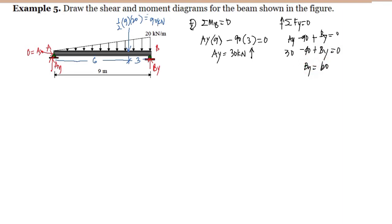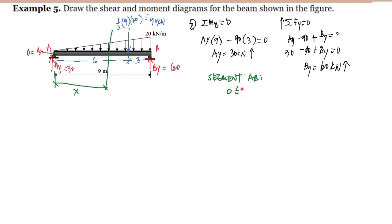Since Ay equals 30, we get 30 minus 90 plus By equals zero, therefore By equals 60 kilonewtons. Now we cut the beam at a distance x. For segment AB, x ranges from zero to nine. We draw the free body diagram with distance x and call the load intensity at that cut y, with the reaction Ay equal to 30.